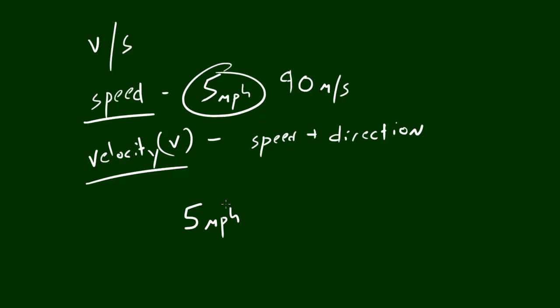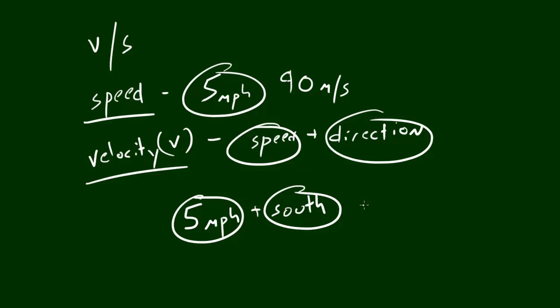And if someone was giving us the term 5 miles per hour, that would be a speed. But if someone said a car was traveling at 5 miles per hour and it was heading south, then since you have these two components of velocity, speed which is 5 miles per hour, and direction which is south, this would be equal to velocity.